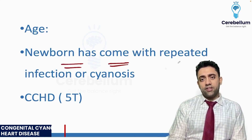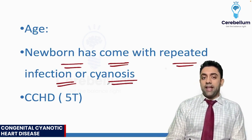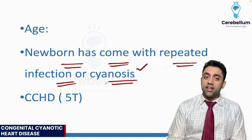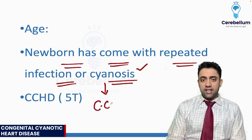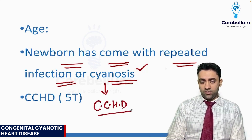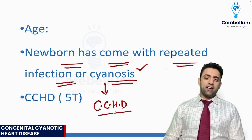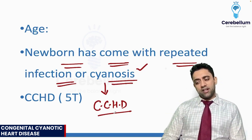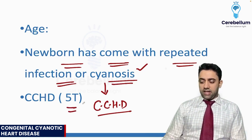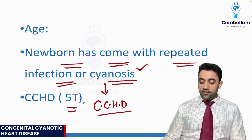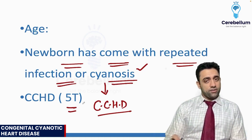A newborn has come with repeated infections or cyanosis — can you tell me any congenital cyanotic heart disease? That's a very common question. If I ask you randomly to name some congenital cyanotic heart diseases, the answer is the 5 T's. What are those 5 T's that you should know in a case of cyanotic congenital heart disease?